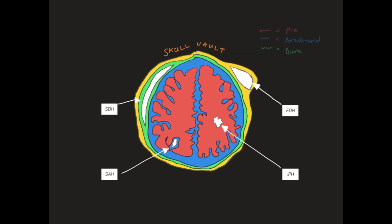Superficial to the dura mater, but deep to the periosteum of the skull vault, is another potential space called the extra-dural space. Under normal circumstances, this does not exist, but when there are pathological scenarios, these spaces reveal themselves. Extra-dural haematomas are typical in patients who suffer trauma to a part of their skull called the pterion, which is naturally or innately vulnerable. If they do so, they get occupation of the extra-dural space by an extra-dural haematoma, shown here.